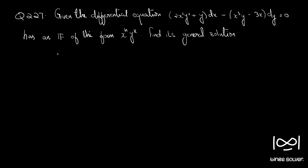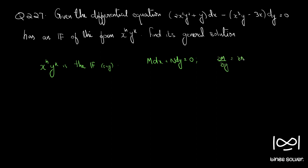The given differential equation is of the form M dx + N dy = 0. We assume x^h · y^k is the integrating factor. If it is an integrating factor, multiplying throughout with x^h · y^k will yield a differential equation where ∂M/∂y = ∂N/∂x, since multiplying by the integrating factor makes the equation exact. We will use that property to find h and k.